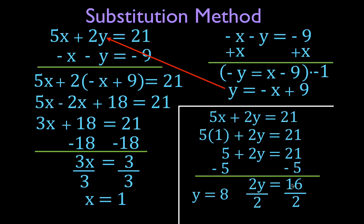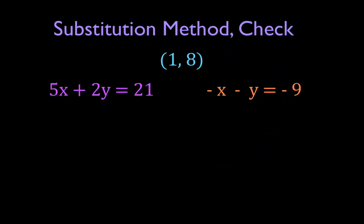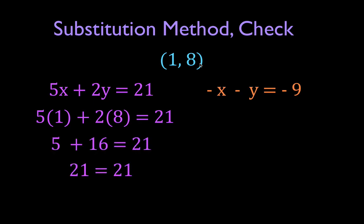Once again, I have found the single pair of x and y coordinates, (1, 8), that are a solution for this equation and for this linear equation. And that is the point where those two lines intersect. Let's just check it again. I have both my original equations. Substituting x equals 1 and y equals 8 into both equations: on the left side, 21 equals 21 — it's true. And minus 1 minus 8 equals minus 9, and minus 9 equals minus 9. So this point is the solution for both equations, and that is the point where those two lines intersect.